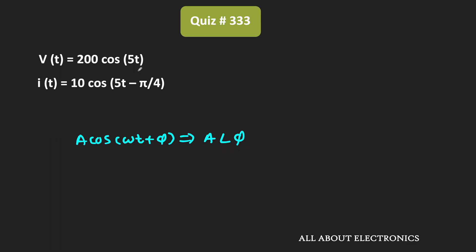So in the phasor form, this voltage V can be written as 200∠0°, where the amplitude is equal to 200 and the phase shift is equal to 0. Similarly, this current I can be written as 10∠-45°, where the amplitude is equal to 10 and the phase shift is equal to -45 degrees.